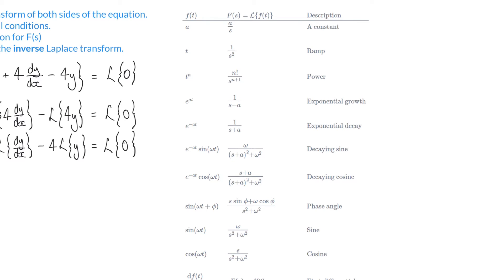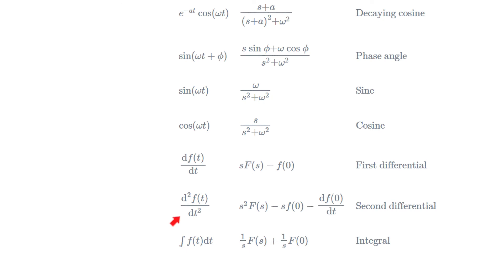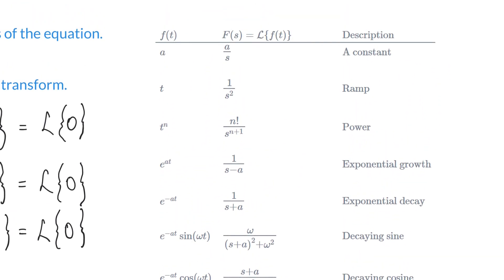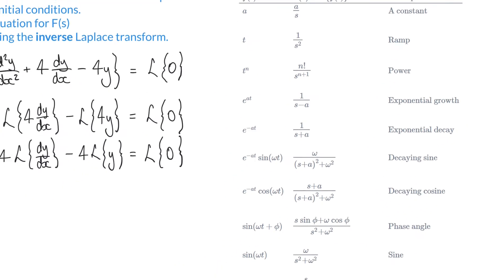We have 4 multiplied by the Laplace transform of dy/dx, minus 4 times the Laplace transform of y. We then apply those transformations referring to our standard table. The second differential transforms into s²F(s) - sF(0) - dF(0)/dx. Our first differential dy/dx transforms to sF(s) - F(0). Remembering that when we see things with respect to x, it's no different than with respect to time. And y, as a function of x, becomes F(s).